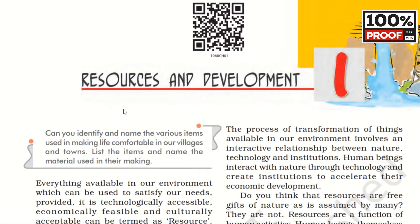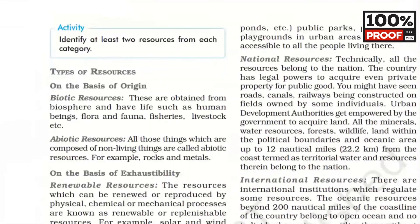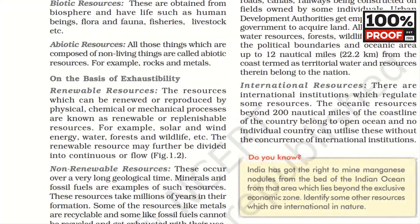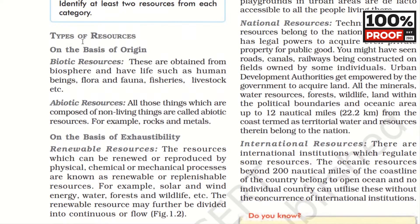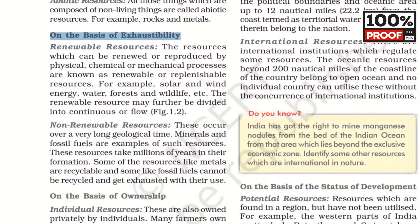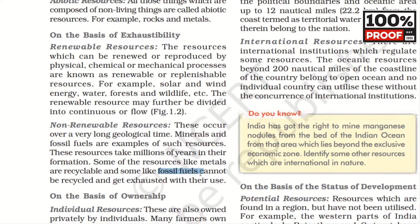I will show you with proof — I have Chapter Number 1, Resources and Development, open here. If you see page number 2, you will see the types of resources mentioned. On the basis of origin, there is Biotic and Non-Biotic. On the basis of exhaustibility, Renewable Resources and Non-Renewable Resources are divided. For Renewable Resources, the example given is forest and wildlife; for Non-Renewable Resources, the example is fossil fuel.